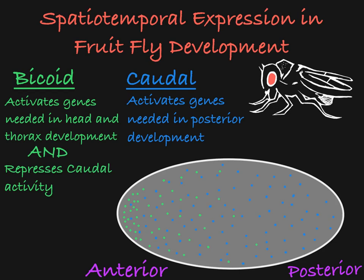The Bicoid protein has a gradient that descends as you approach the posterior end of the embryo. This is a result of Bicoid mRNA anchoring on the anterior side of the egg during oogenesis.